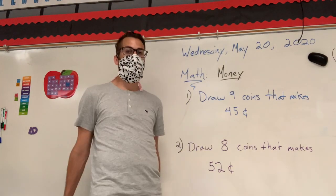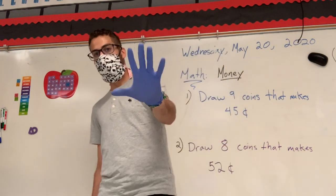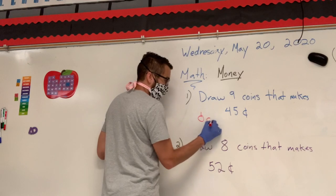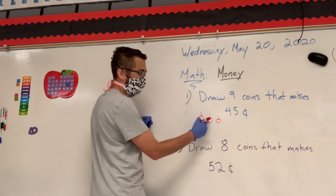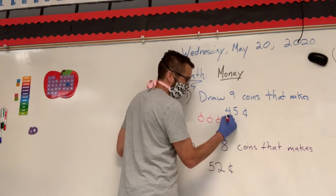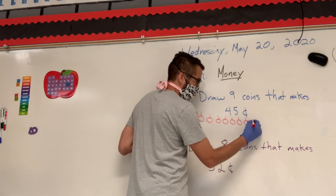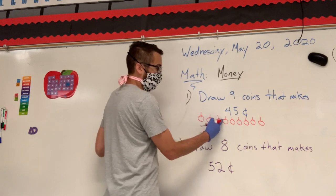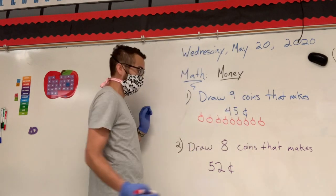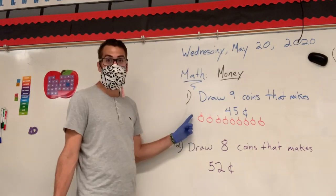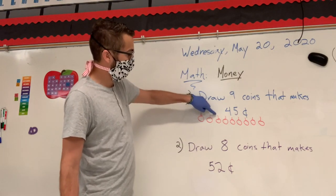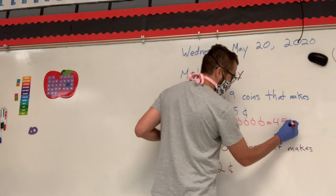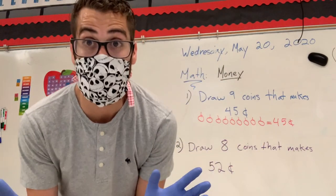If you think about nickels, the value of a nickel is five cents. I'm going to draw nine nickels: one, two, three... counting by fives we get 5, 10, 15, 20, 25, 30, 35, 40, and 45. We have nine coins and each coin is a nickel worth five cents. So nine nickels equals 45 cents.